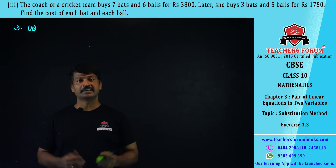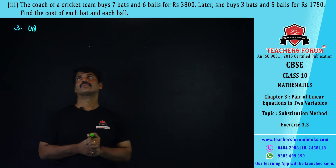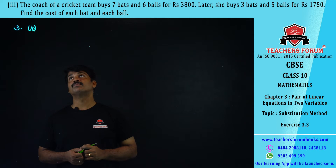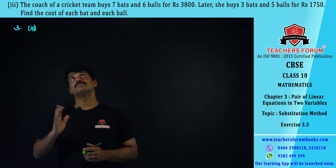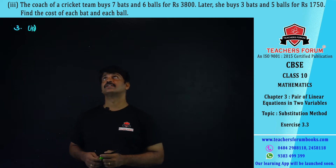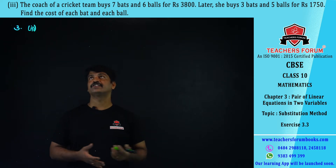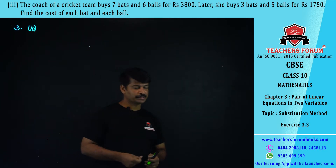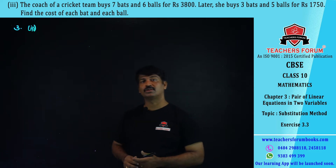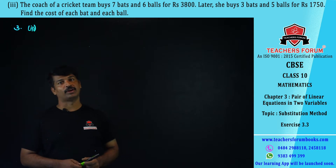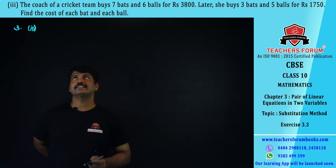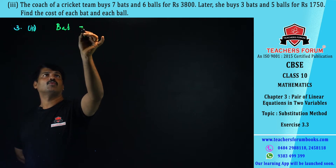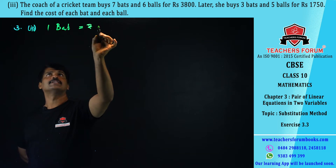Let us read the third problem. It is given that a coach buys seven bags and six balls for rupees 3800. Later, she buys three bags and five balls for rupees 1750. You have to find the cost of one bag and one ball. So let us assume that the cost of one bat is rupees x.